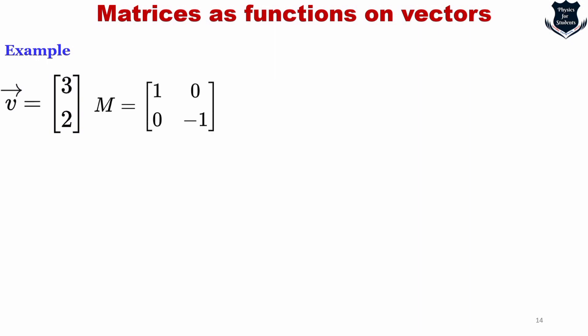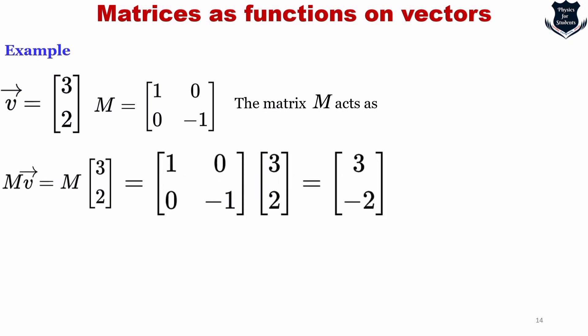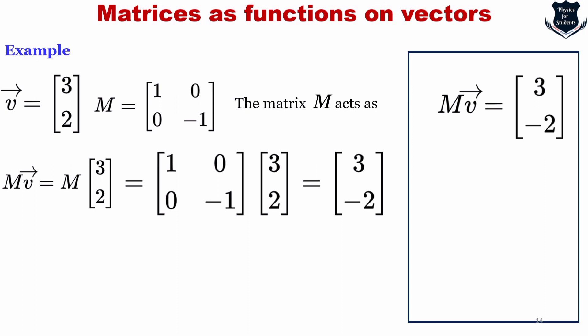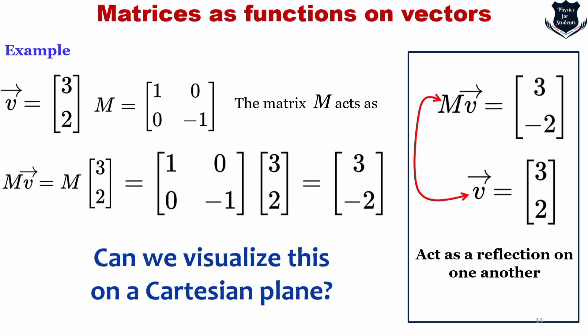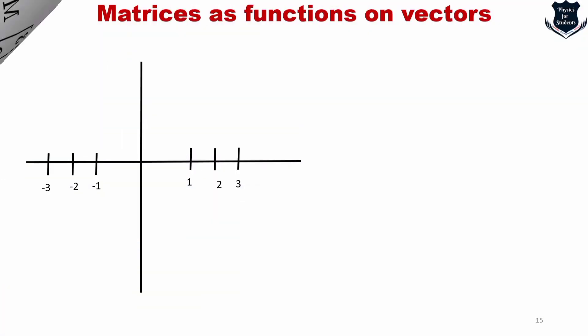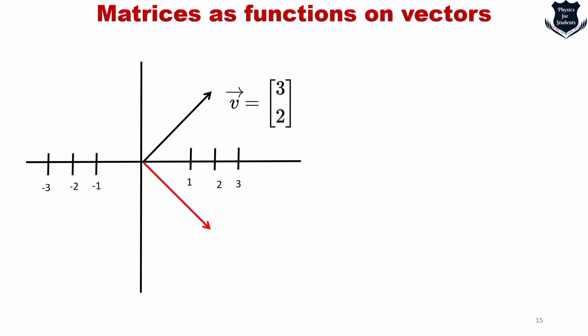For example, if V equals [3, 2] and M equals a specific matrix, then M acts on V to give [3, -2]. So M·V equals [3, -2] while V is [3, 2]. We can say it acts as a reflection because the signs are reversed: 3, -2 versus 3, 2. Can we visualize this on a Cartesian plane? When matrix M acts on this vector, it performs a reflection — the arrow points to V = [3, 2] and to M·V = [3, -2] in the negative y-direction, showing reflection about the x-axis.